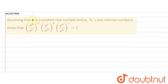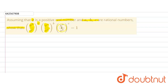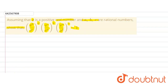The given question says that assuming x is a positive real number and a, b, c are rational numbers, show that or prove that (x^b / x^c)^a multiplied by (x^c / x^a)^b multiplied by (x^a / x^b)^c is equal to 1. This is what we are supposed to prove.